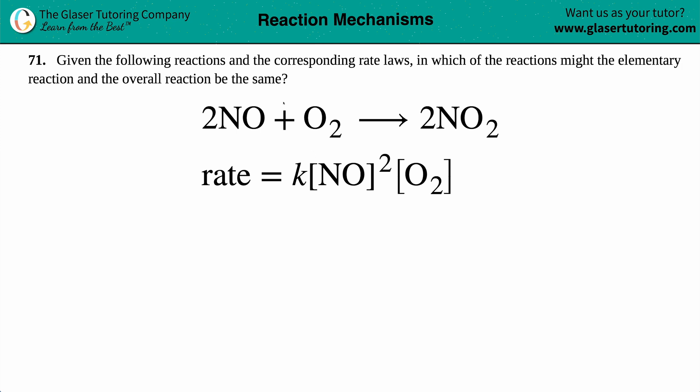Number 71. Given the following reactions and the corresponding rate laws, in which of the reactions might the elementary reaction and the overall reaction be the same? Okay, and then they give us a balanced equation. 2NO plus O2 yields 2NO2, and then they give us a corresponding rate law.